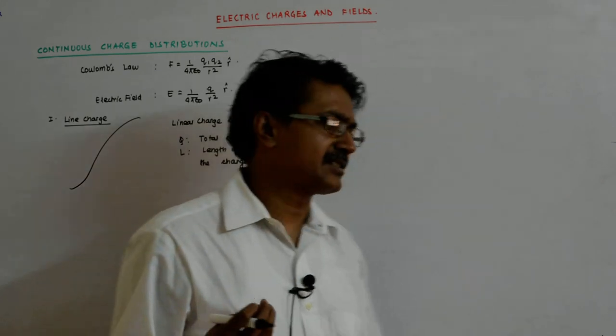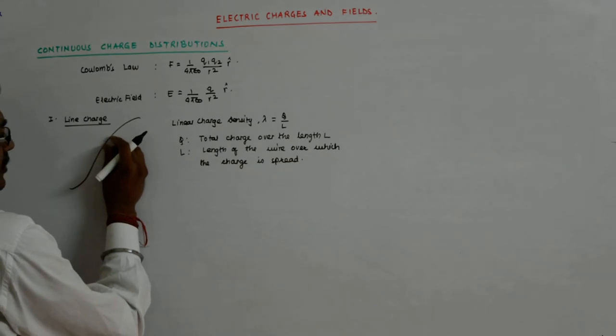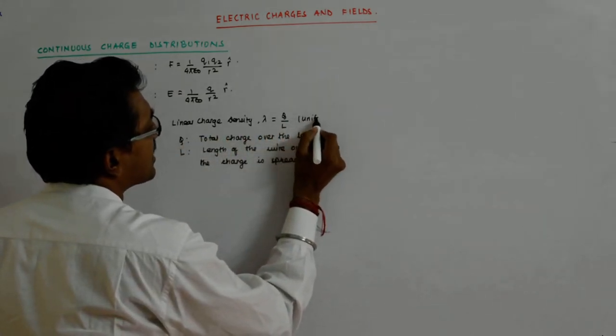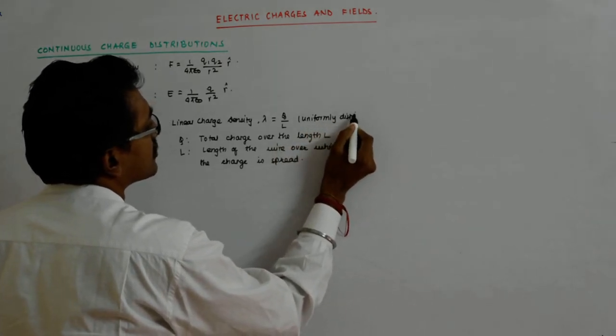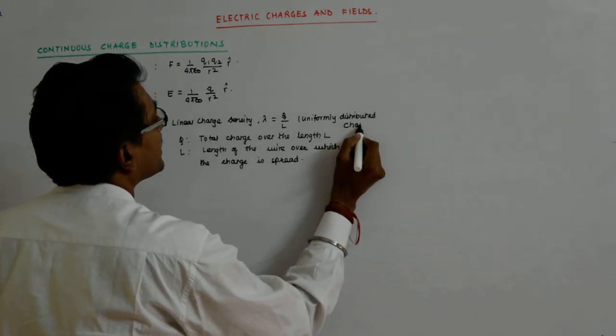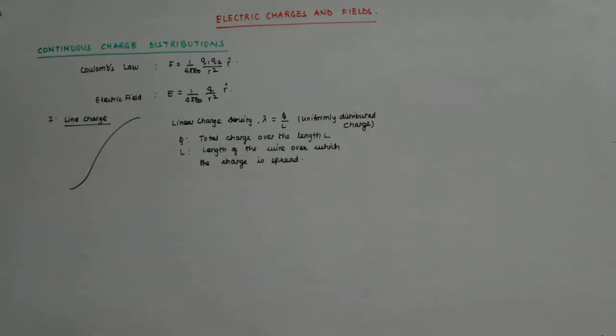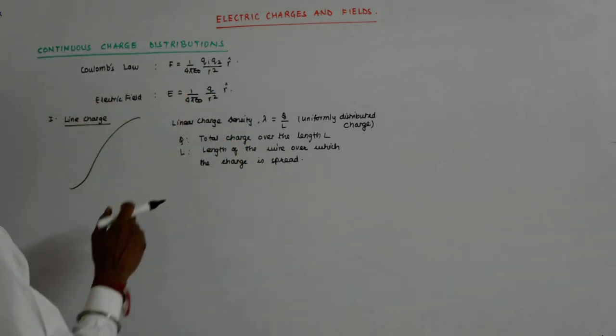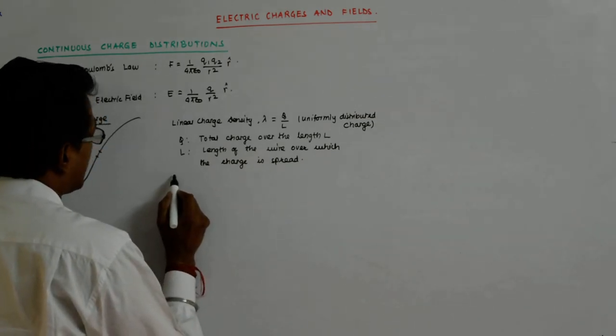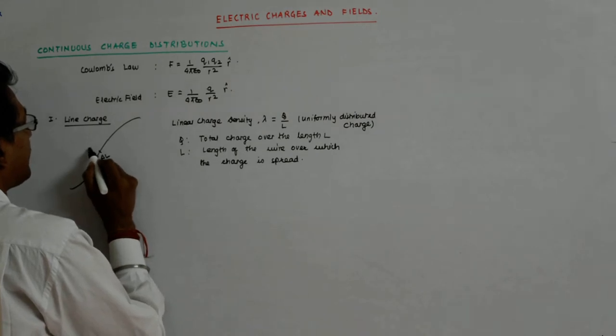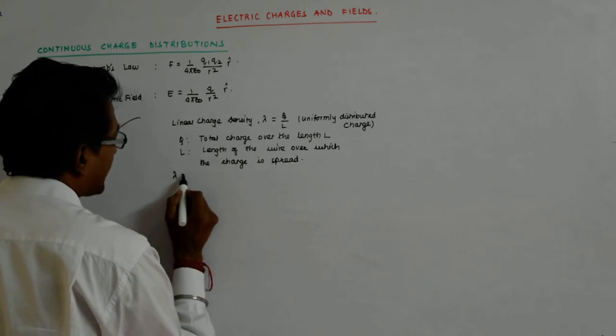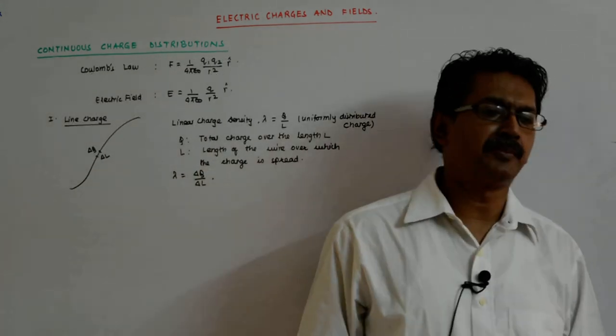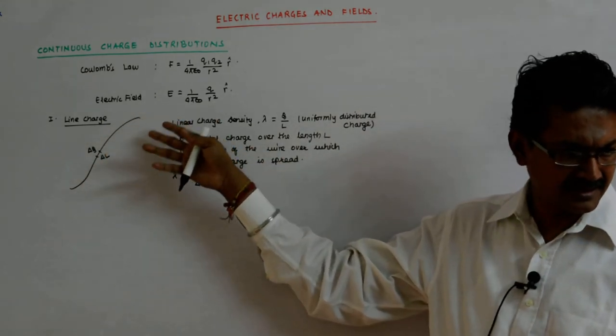Now it may so happen that the charge spread in this area is maybe more than in this length, maybe more than this length, which may be less than this length. So what we said is for a uniform charge density, uniformly distributed charge. What if it is a non-uniform charge? Then what do we do? We take a small length, say delta L, find there is a charge delta Q over it. So we start defining lambda as delta Q upon delta L. If it varies from one part to another, in the part in which it is uniform, we take it as this, maybe then the lambda is something else.